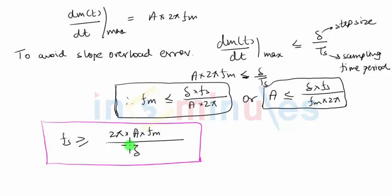Delta is the step size, and you can see that the only way by which I can reduce the sampling frequency is by increasing the step size. If the step size of the delta modulator is fixed, then I have to use that higher sampling frequency which comes out to be a value greater than the right hand side.